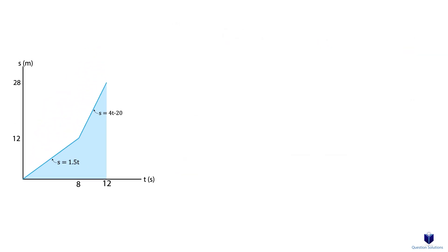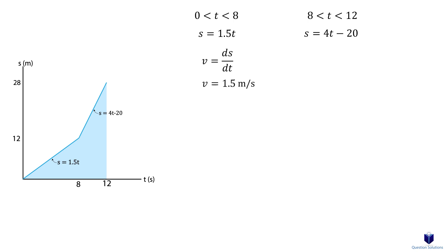The first type of graph is the position versus time graph. This is probably the easiest of all the other graphs, because the solution will almost always include just derivatives. First, write down the equations of each segment given. Remember to use y equals mx plus b to figure out the equations. If the question asks for the velocity, take the derivative of each of the segments.